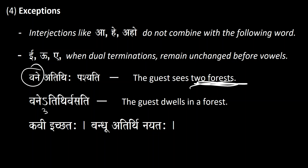In the next example, the 'a' is elided — 'the guest dwells in a forest.' Here 'vane' is followed by 'atithi' and the 'a' was elided. In this case 'vane' is not dual but vocative singular. So 'vane, vane, vanani' — 'vane' is dual in the first sentence, but vocative singular in the second. 'Vane' is a neuter noun ending in 'a,' and that is why the elision occurs in the vocative singular but not in the dual.